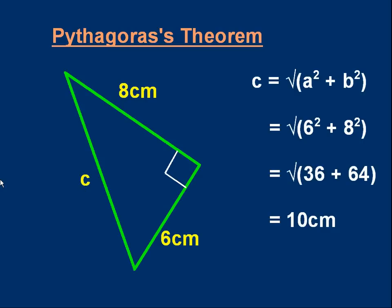And I hope you got something like this. C is equal to the square root of 6 squared plus 8 squared. Works out to be the square root of 100, which is 10 centimetres. It's worked out a nice whole number.